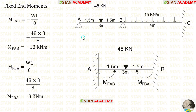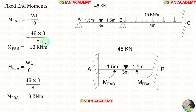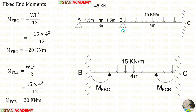Now let us calculate the fixed end moments. First, let us take span AB. In span AB, there is a point load of 48 kN acting at the center. The formula for the fixed end moments are −WL/8 and +WL/8. After applying the values inside the formulas, we get M_AB and M_BA.